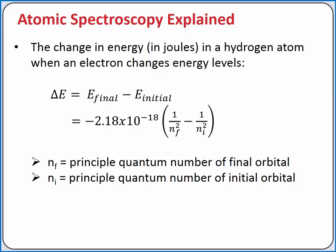Mathematically, we can calculate the change in energy for the electron by subtracting the initial energy from the final energy of the electron. Our change in energy equals negative 2.18 times 10 to the negative 18th times the quantity 1 divided by the final principal quantum number squared minus 1 divided by the initial principal quantum number squared.